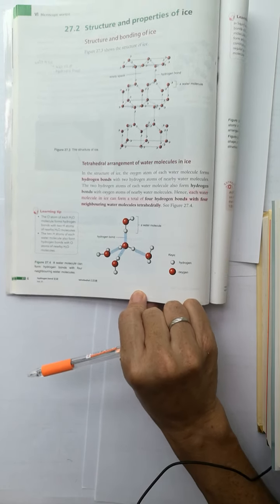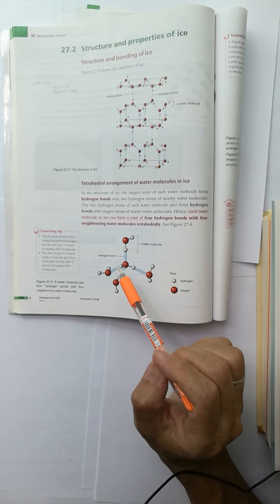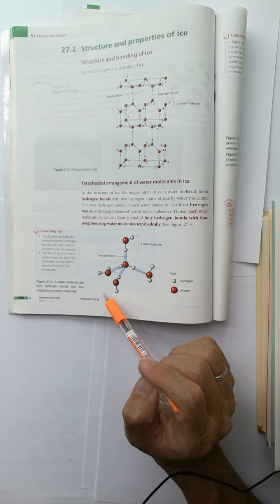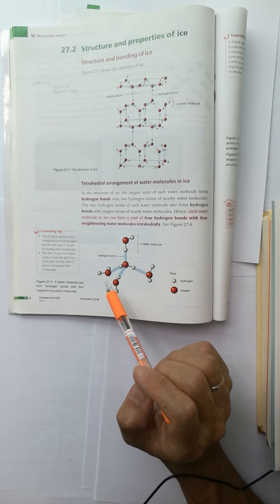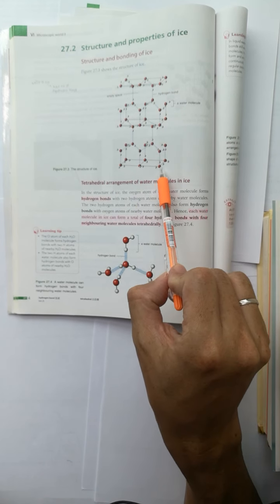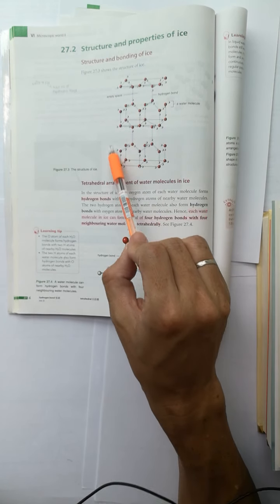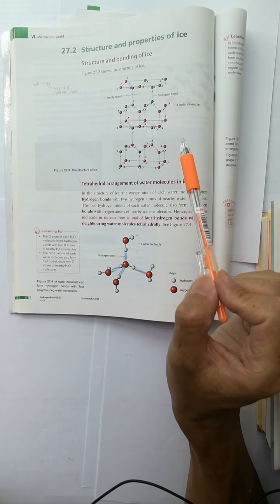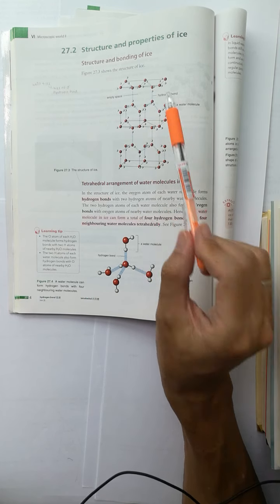Each water molecule in ice forms a maximum number of hydrogen bonds, and they are arranged in an open structure in which there are a lot of spaces among them.